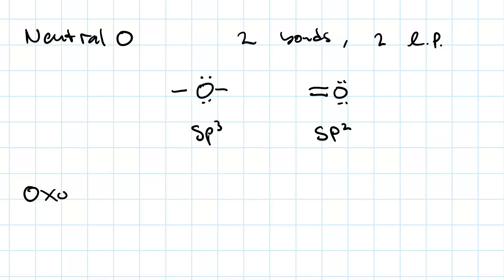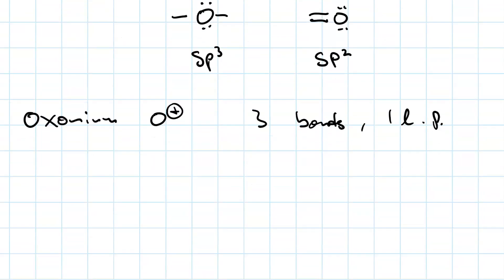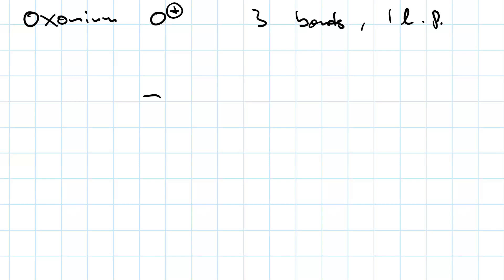For an oxonium, that is an O with a positive charge, we'd have to have three bonds and one lone pair. So, we can either have three single bonds and a lone pair, or we can have a double bond and a single bond and a lone pair. Both of those are okay.